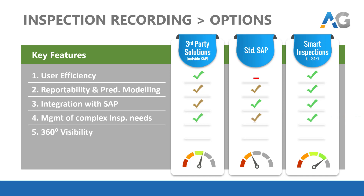The fourth feature is management of complex engineering inspection needs. Standard SAP scores less due to the lack of adaptability to some of the practical problems from the field. The fifth feature, 360 degree visibility, is the ability for users to walk through the entire business scenario digitally regardless of where you start from. This says a lot about a product and its features. On this one, Smart Inspection outscores the other two options by a fair margin due to its strong solution architecture and business-friendly features.